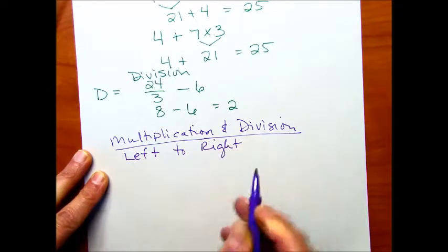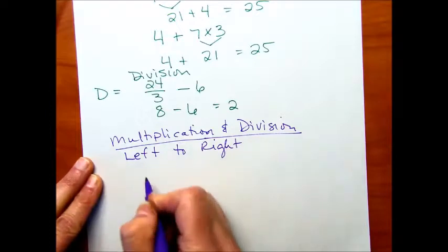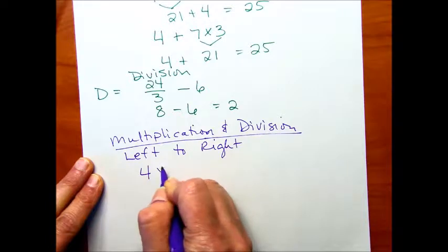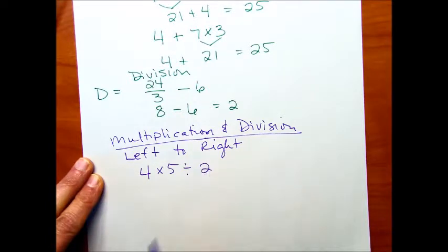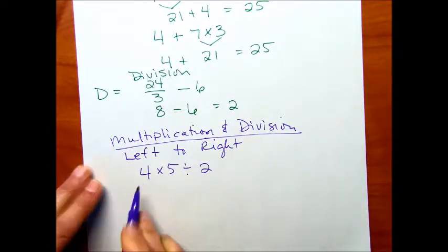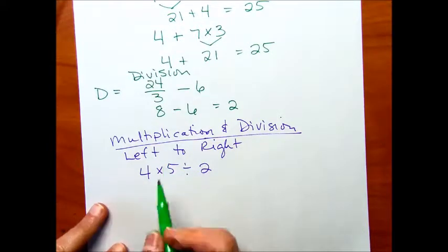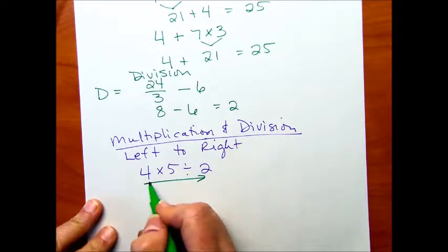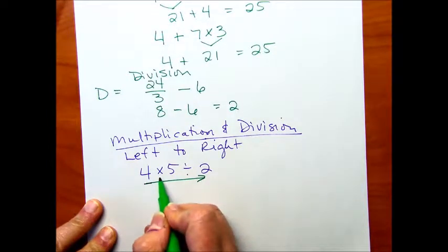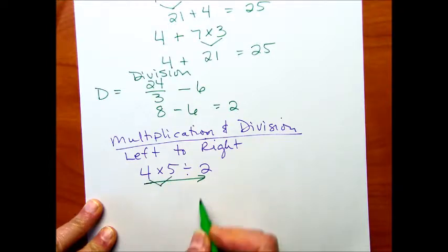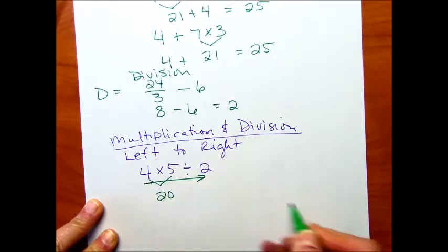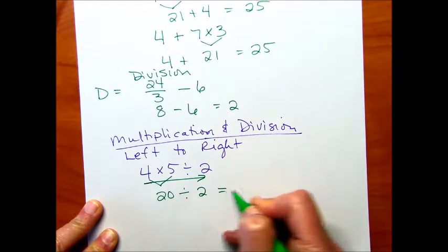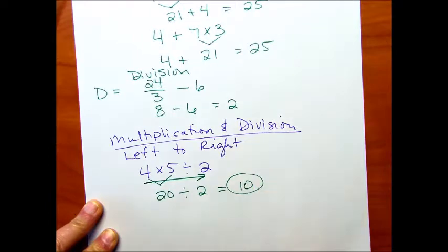I'll give you a few examples here. So for instance, if I have 4 times 5 divided by 2, I'm just going to start here on my left side, which is the 4, and I'm going to go in this direction. So I start here with this first operator, which is the times multiplication. 4 times 5 is 20. 20 divided by 2. See, I just bring it down. It's 10.